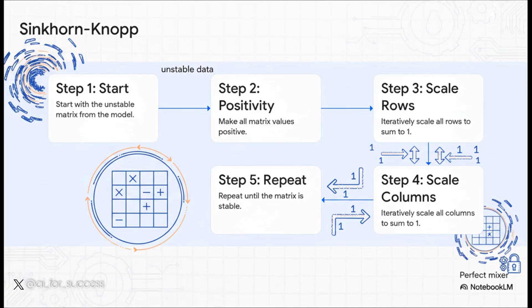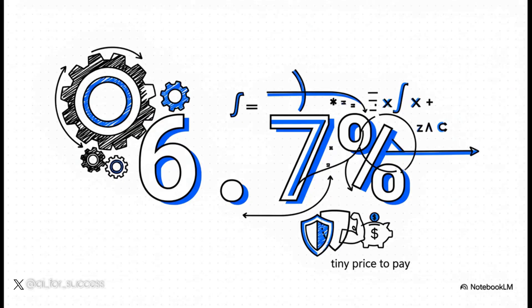How do they actually do this in practice? They use a clever and surprisingly simple process called the Sinkhorn-Knopp algorithm. You start with your unstable matrix, make all its numbers positive, and then repeat a simple two-step dance: scale all the rows so they add up to one, then scale all the columns so they add up to one. You repeat that over and over until the matrix settles into that perfect, well-behaved mixer. And you might think all this extra math must really slow things down — but thanks to some seriously clever engineering, like fusing operations together and recomputing values on the fly, the added training time is just 6.7%. That is a tiny price to pay for getting both stability and power.